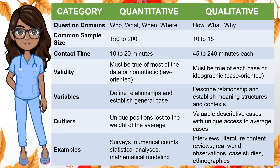The following table from What is Qualitative Research by Alasuturi 2011 compares quantitative and qualitative research based on different categories. Question domains for quantitative research are who, what, when, and where; for qualitative research, how, what, and why. The common sample size for quantitative research is 150 to 200 or more respondents, while for qualitative research, 10 to 15 respondents only. For quantitative research, contact time is 10 to 20 minutes, while qualitative research uses 45 to 240 minutes each.